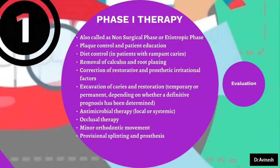All antimicrobial therapy, whether local or systemic, comes under phase 1 therapy. Any occlusal corrections like coronoplasty or selective grinding should also be done in phase 1 therapy. Minor orthodontic tooth movement, provisional splinting, and related procedures are also part of phase 1 therapy.